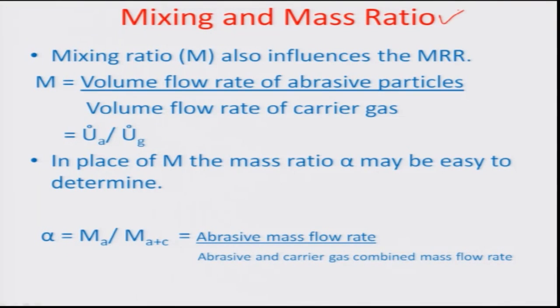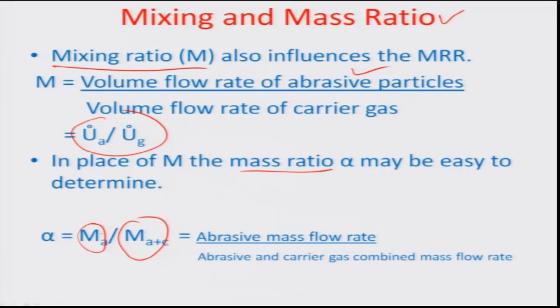Two important parameters related to how the gas flows and how abrasive is loaded are mixing ratio and mass ratio. Mixing ratio m is defined as the volume flow rate of abrasives divided by the volume flow rate of carrier gas: m = V̇_A / V̇_G. Mass ratio alpha is the mass flow rate of abrasive divided by the total mass flow rate of abrasive plus carrier gas: α = ṁ_A / (ṁ_A + ṁ_G). These help determine the appropriate operating level for any given process.